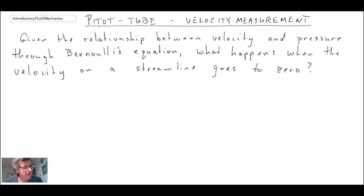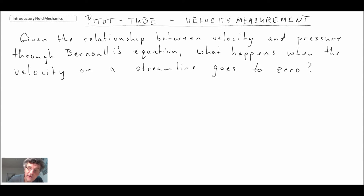What we're going to do is look at the relationship within the Bernoulli equation. We ask ourselves the question: what happens when the velocity along a streamline comes to zero? And this is key to the measurement of the pitot static tube itself.